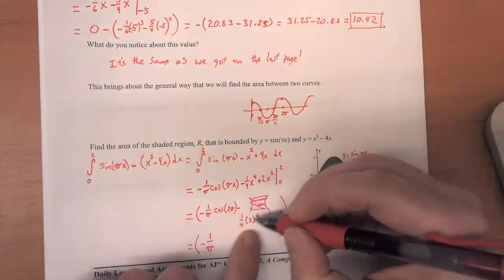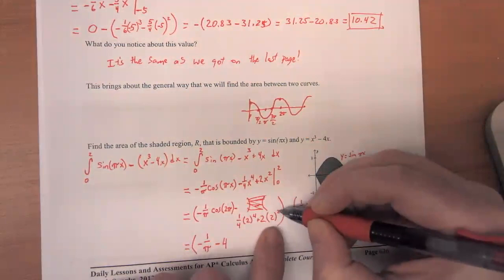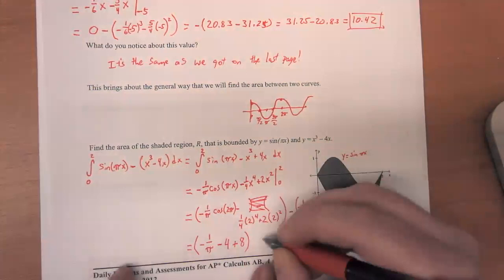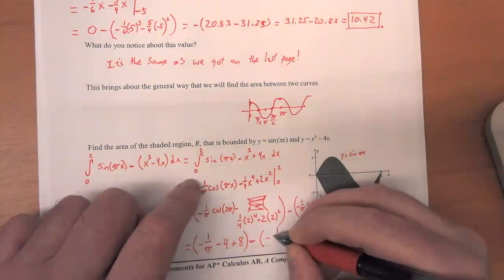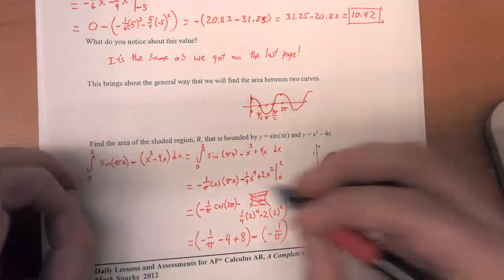Minus 2 to the fourth power is 16. And 1 quarter of 16 is 4. So that's going to be minus 4. 2 squared is equal to 4. 2 times 4 is equal to 8. And then over here, we've got the cosine of 0, which once again is equal to 1. So that's negative 1 over pi is all this there.